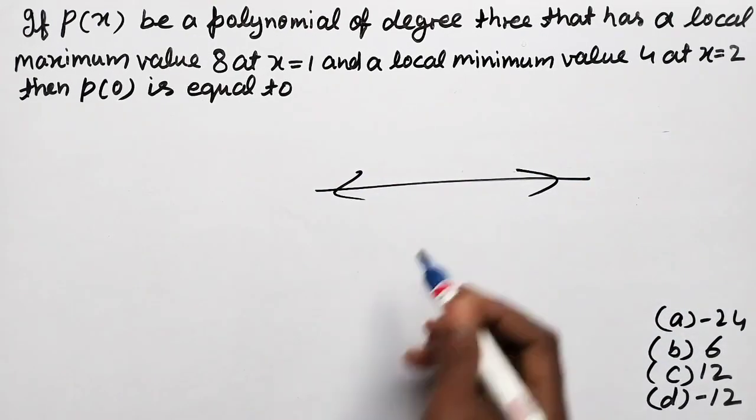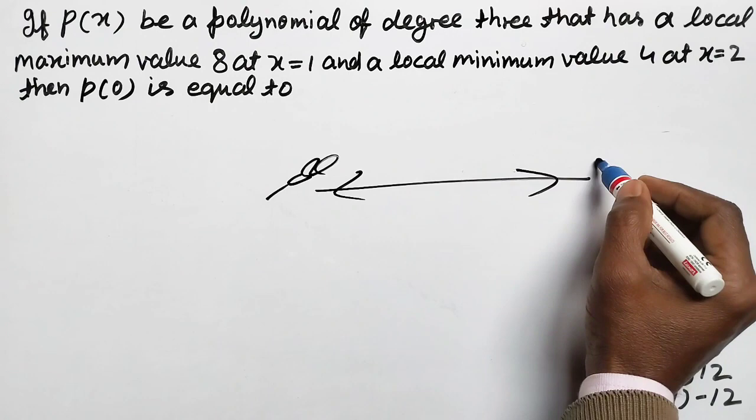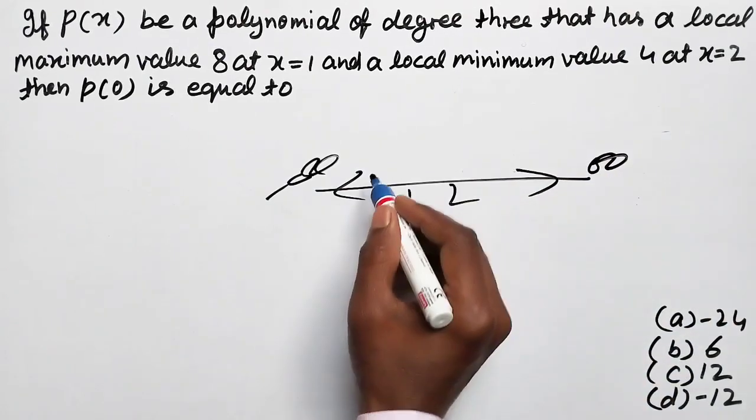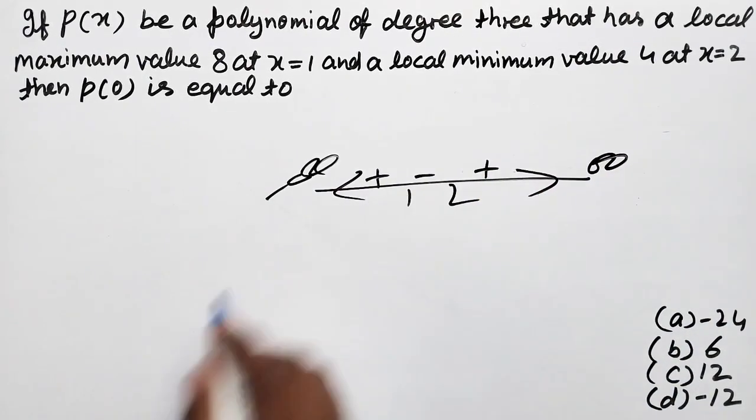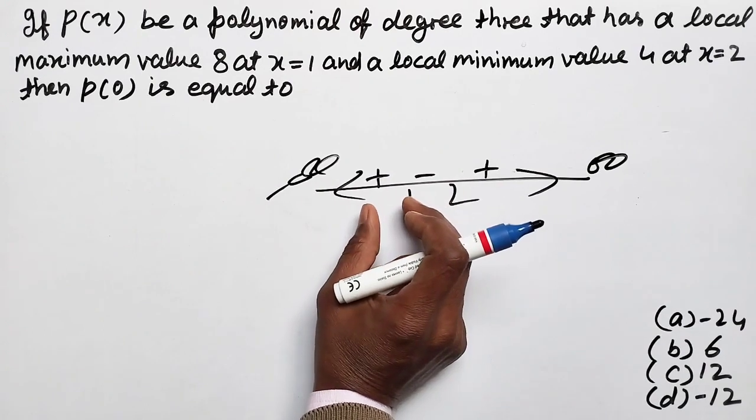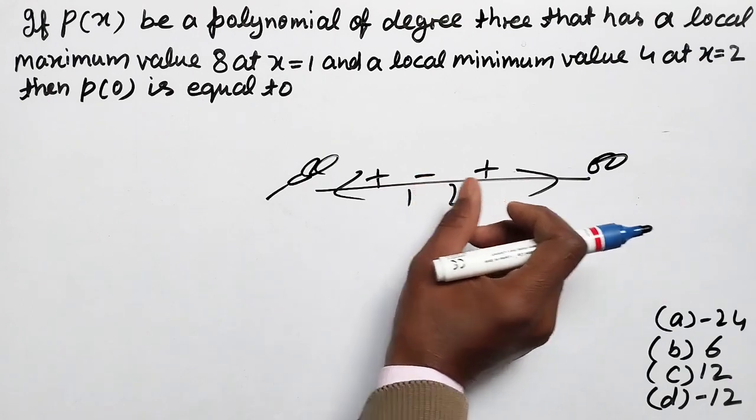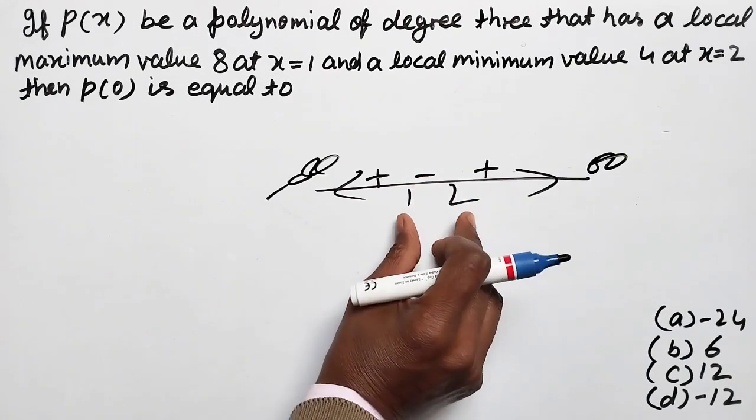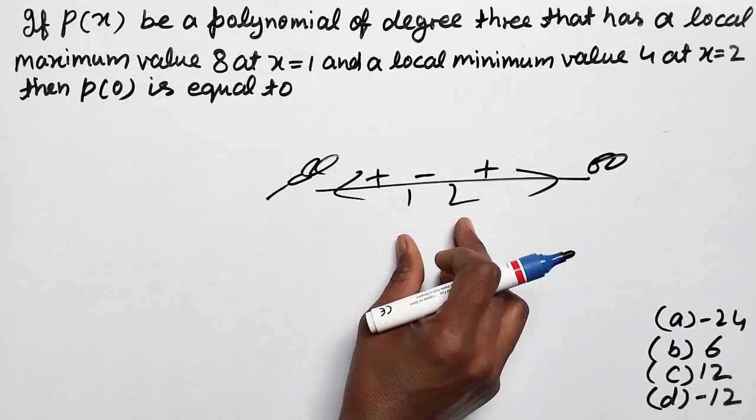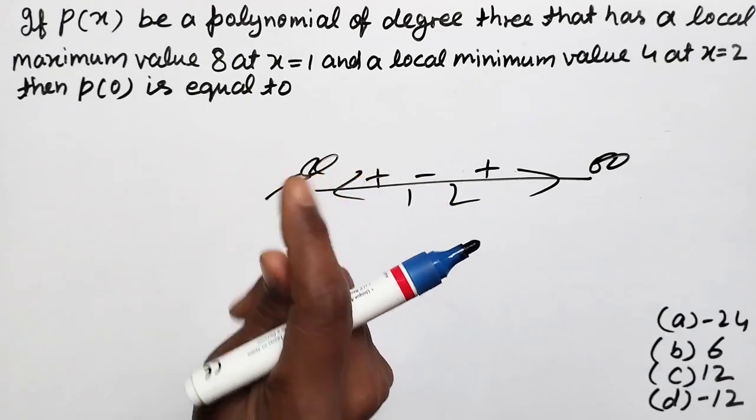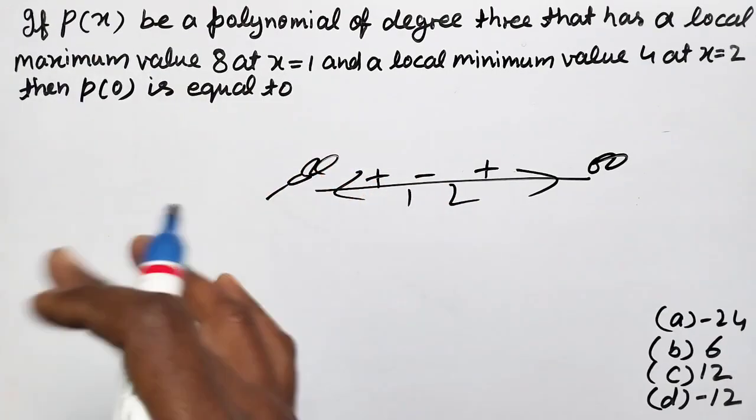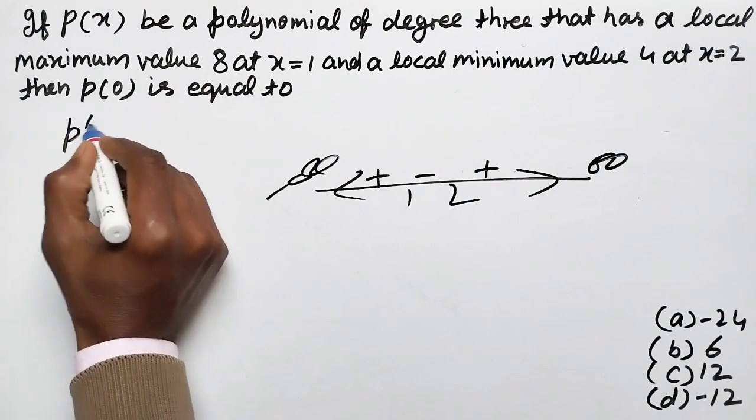At 1 and 2, at 1 it's maximum plus minus and at 2 it's minimum minus plus, means 2, 0. This polynomial has degree 2. This is the maximum minimum when we differentiate one time.